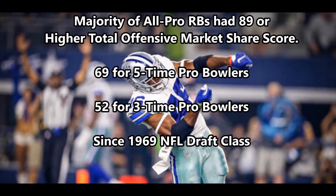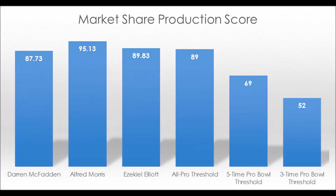What makes the Cowboys running back group so interesting is that everybody in their group hit the five-time pro bowl threshold, and two of them hit the all-pro threshold. Now keep in mind these are production thresholds — there are other things to the running back position, whether you're talking about athleticism metrics or just film: the fact that they're good running backs who can go from one system into another and have lots of success.